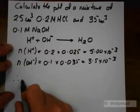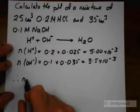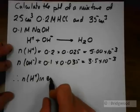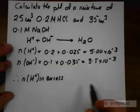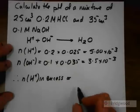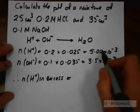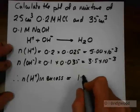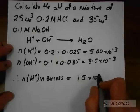So therefore, once the reaction has occurred, the number of moles of hydrogen ions in excess that are not going to be used is going to be equal to 5 times 10 to the minus 3, minus 3.5 times 10 to the minus 3, which is 1.5 times 10 to the minus 3.